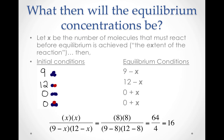Trial and error or some algebra would lead us to the result that x is equal to 8. If x is 8, then the equilibrium expression equals 16, the equilibrium constant, and the equilibrium concentrations for each reactant and product could be determined. This process is the basic process for calculating the equilibrium position for a chemical reaction when given the equilibrium constant and a set of initial conditions.